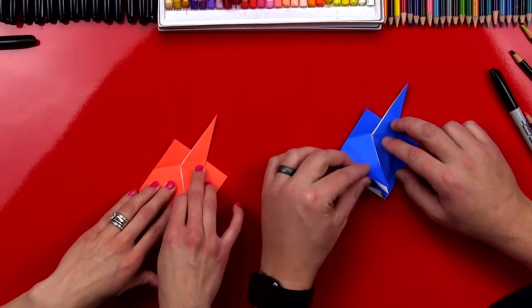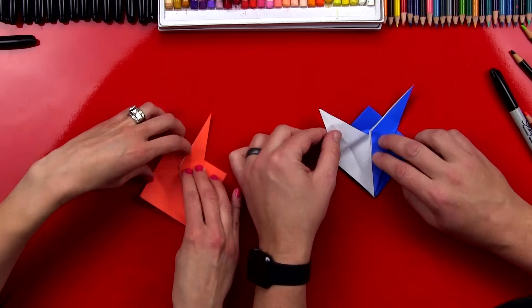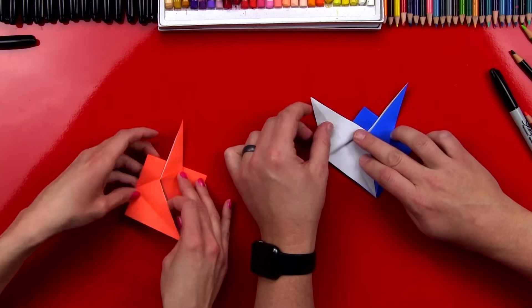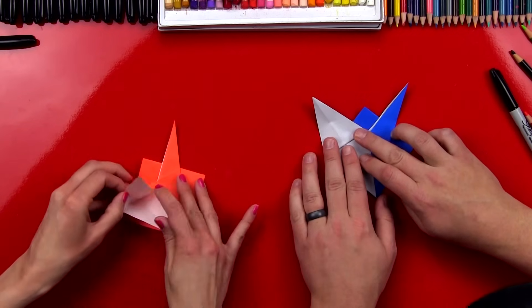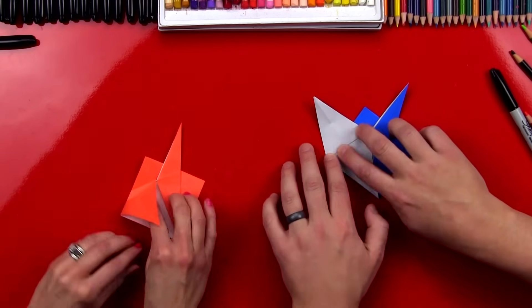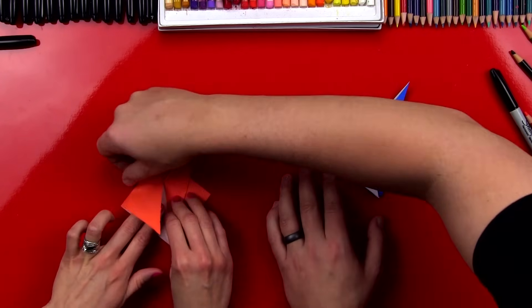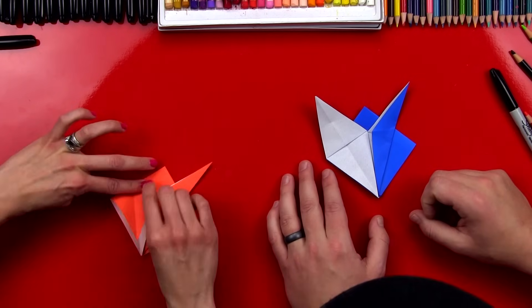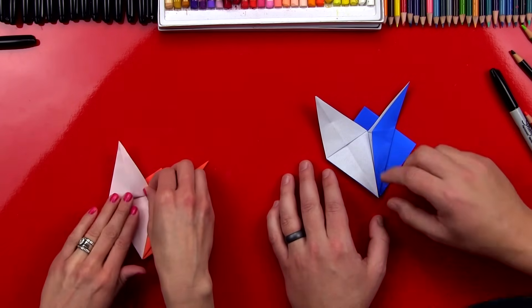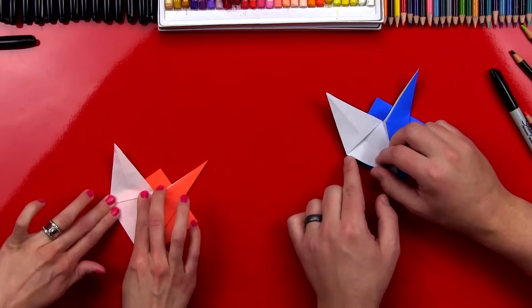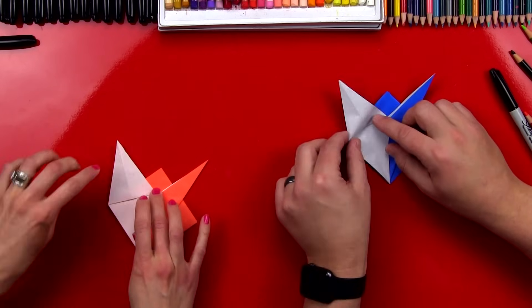Okay, now we're gonna repeat those same steps on the other side. So we'll take that top flap and then fold it out diagonal. Press it down. There you go. So we're gonna fold from this corner to the middle. And then we're gonna take this edge and then fold it to the middle.